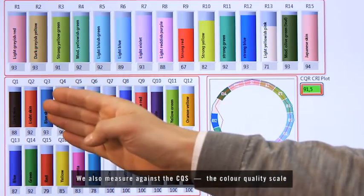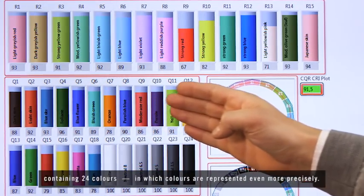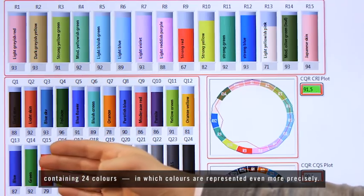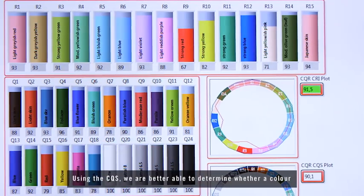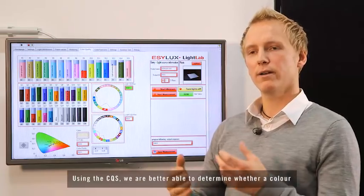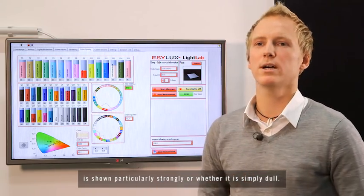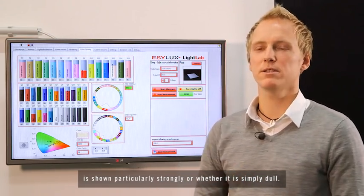Wir messen auch noch den CQS, die Color Quality Scale, das sind 24 Farben, in dem eben noch genauer die Farben dargestellt sind, in dem wir dann wirklich noch genauer sagen können, wird eine Farbe besonders kräftig, besonders gut dargestellt oder eben nur flau.